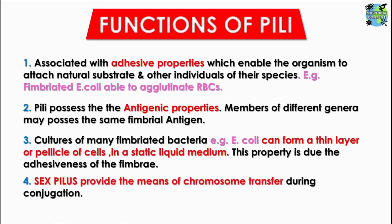The next function of sex pili is that they provide the means of chromosome transfer during conjugation. The sex pili are wider and longer and act as organs of conjugation with bacteria that do not have this type of pili, allowing transfer of genetic material from one cell to another. This conjugation is mainly due to the sex pili synthesized by the specific plasmid or F factor. Only bacteria able to synthesize sex pili — determined by the presence of the F factor — can conjugate with other bacteria.